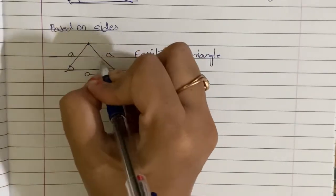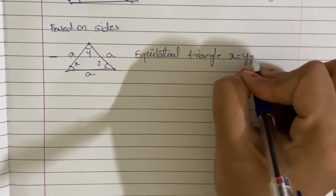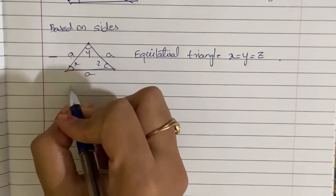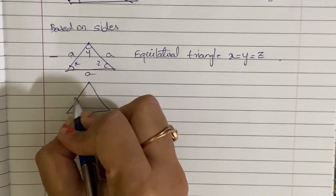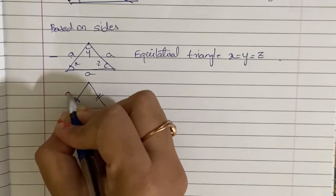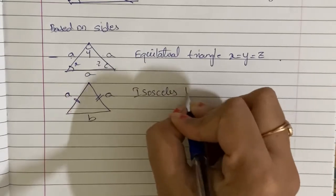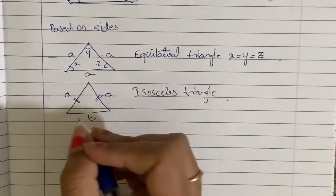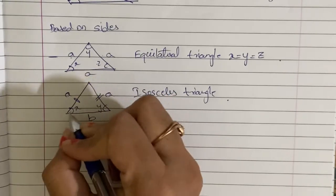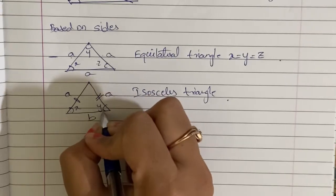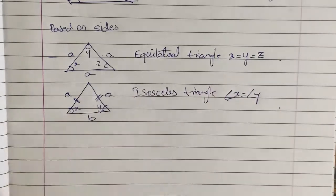Equilateral triangle — all three angles are equal: angle X is equal to angle Y is equal to angle Z. Next, isosceles triangle: these two sides are equal — side A and side A, and side B is different. In an isosceles triangle, the two equal sides have opposite angles that are equal, so angle X is equal to angle Y.